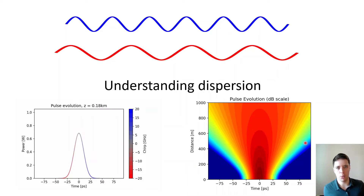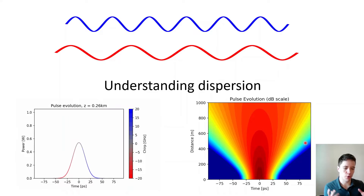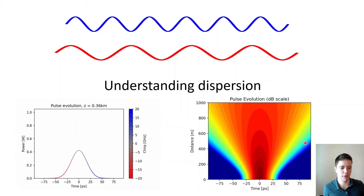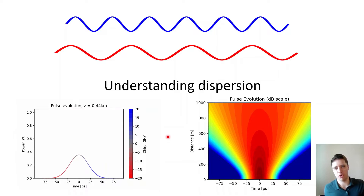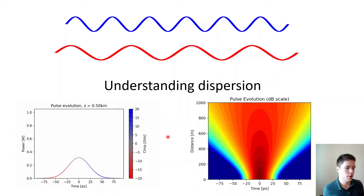Hello and welcome to another video on basic fiber optics. Today we're going to talk about dispersion. In a previous video we explored second-order dispersion, which is an effect that causes an optical pulse propagating through a fiber to spread out in the time domain, as we've seen in the animation produced here. The second-order dispersion isn't the only dispersion effect — we also have third-order, fourth-order dispersion and so on, so we'll take time to understand where this dispersion behavior comes from, how to analyze it, and what its properties are.